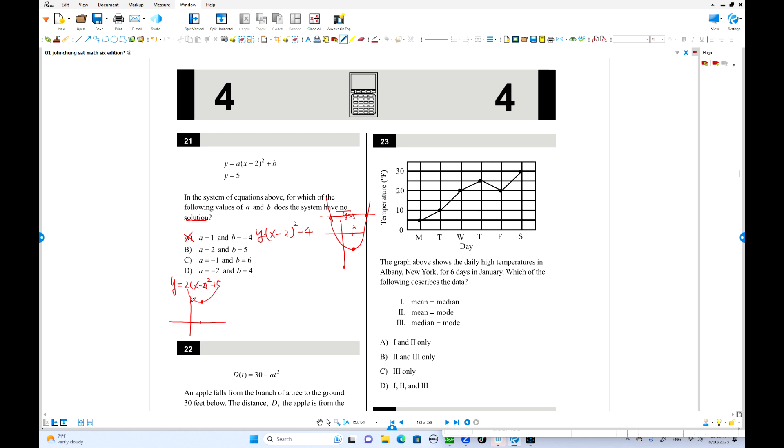Second one: a is 2. I'm going to write down over here. a is 2, the graph is 2x minus 2 squared plus 5. Where is vertex? When x is 2, y equals 5 up here. Still graph is open upward. This is 5. The other equation is y equals 5 up here. They have one solution. This is wrong. Try C. a is minus, y equals minus x minus 2 squared, and b is 6. This is the graph, open downward. This is 6 over here, 2 over here. Downward. Where is y equals 5 up here? You have two solutions.